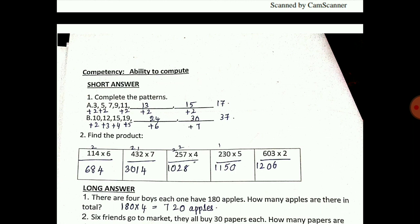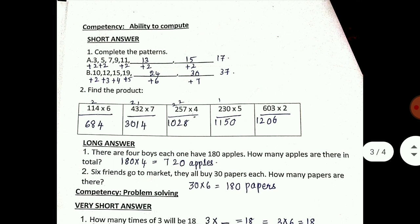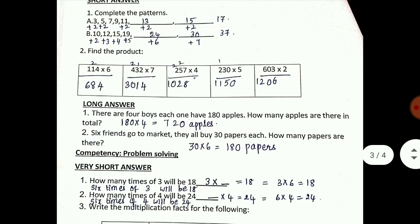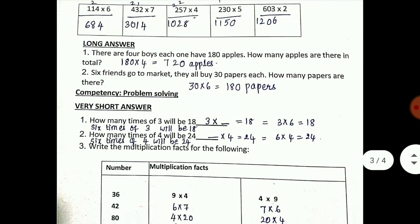24 plus 6 is 30, 30 plus 7 is 37. Next, find the product - this you can easily do, just find the product and check the answers. There are 4 boys, each one has 180 apples, so how many apples are there in total? 180 into 4 is 720. Next, 30 into 6 is 180. How many times of 3 will be 18? 6 times of 3 will be 18. Each time you have to read the question and answer in full form.